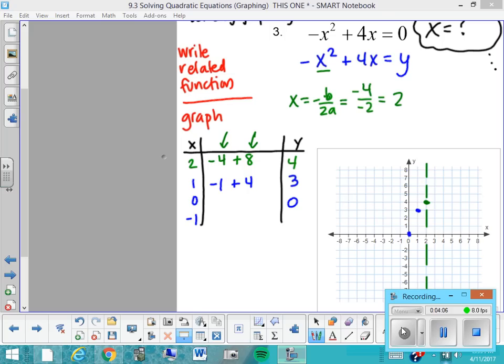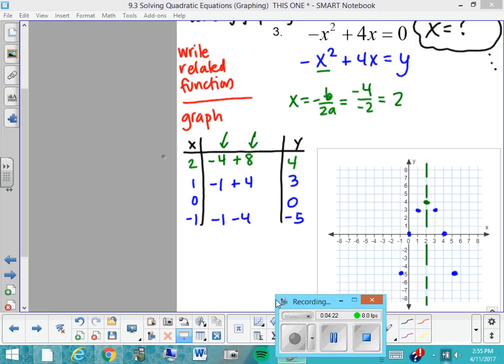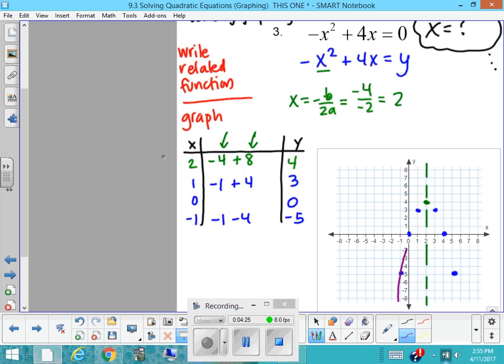And if I plug in negative 1, then I get negative 1 minus 4 or negative 5. And I can graph that point. So now I can get my mirrored points and I mirror across the axis of symmetry. So I have a point here and here and here. So all of this kind of stuff that we just did of the graphing should be mostly review. The only new piece so far is that related function.